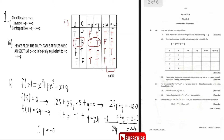Since p = -6, substitute back into p + q = 24: -6 + q = 24, so q = 30. We found p = -6 and q = 30. You can always check by substituting back to verify f(5) = 0 and f(1) = 24.